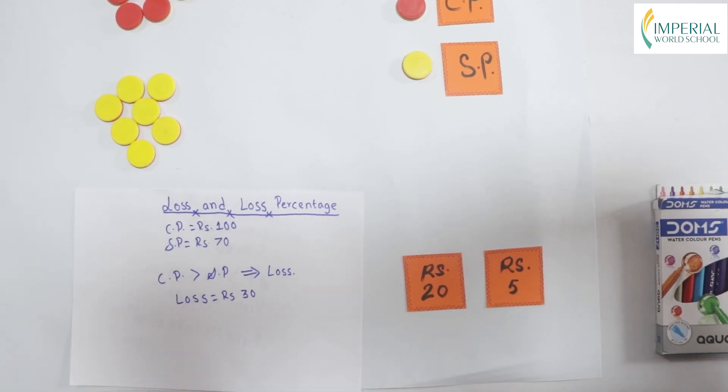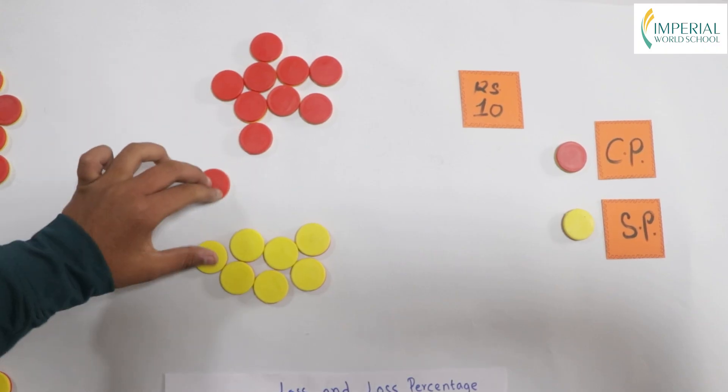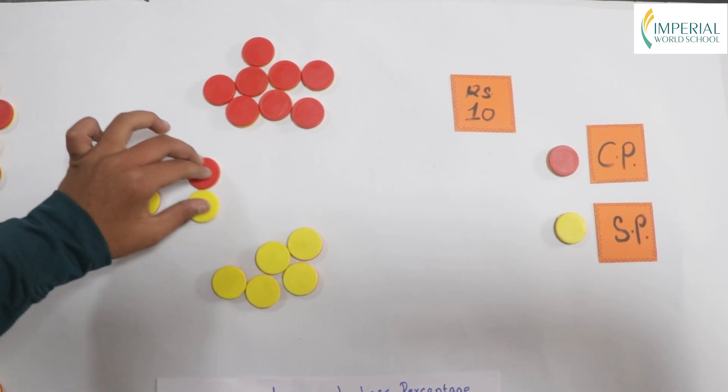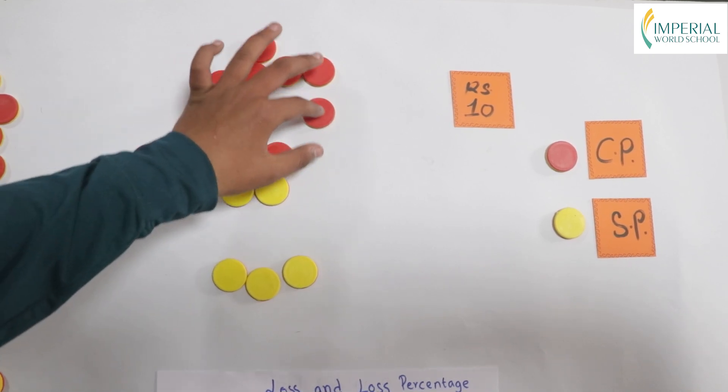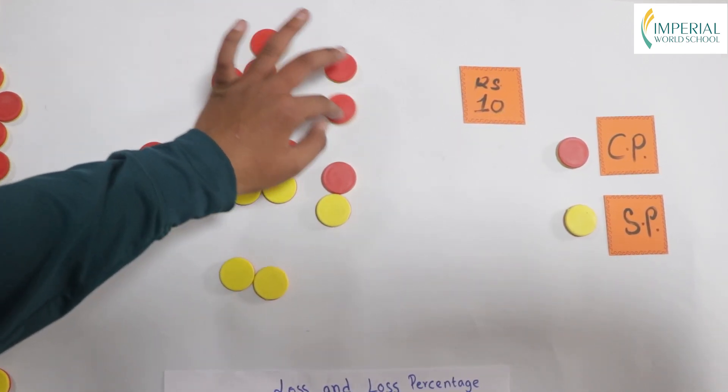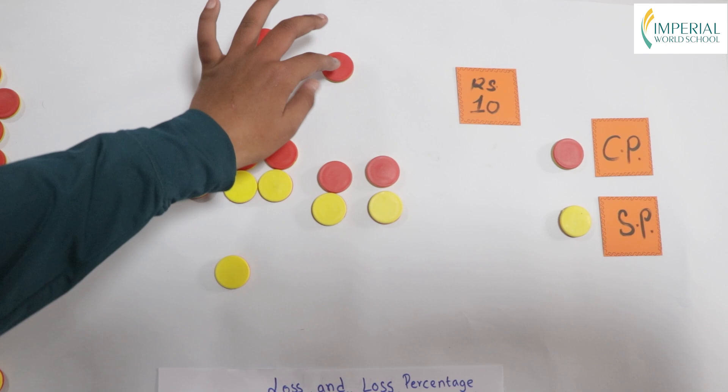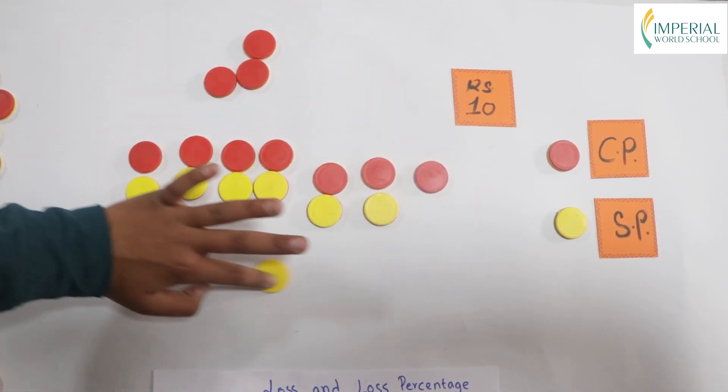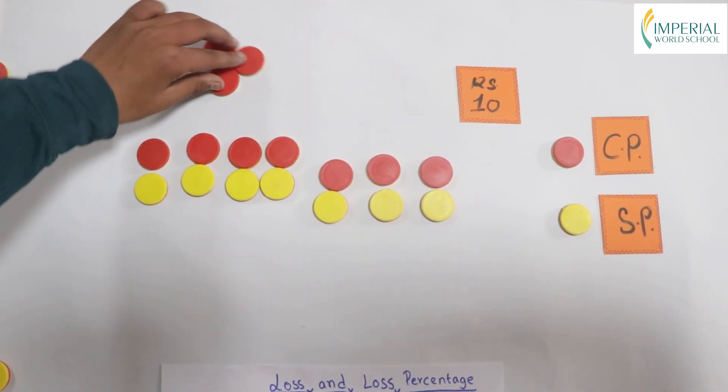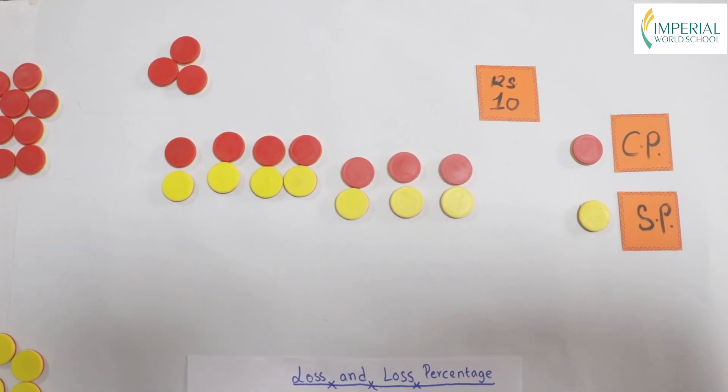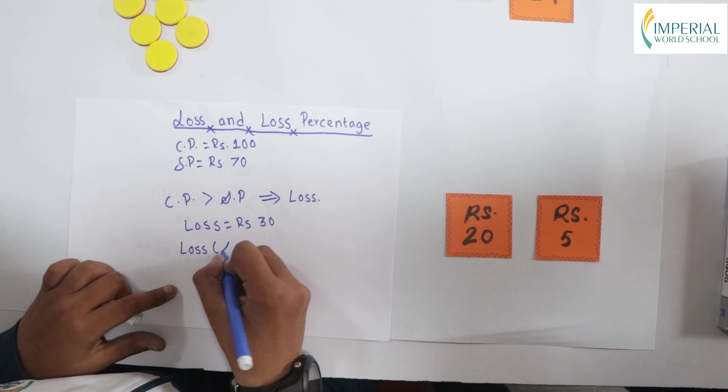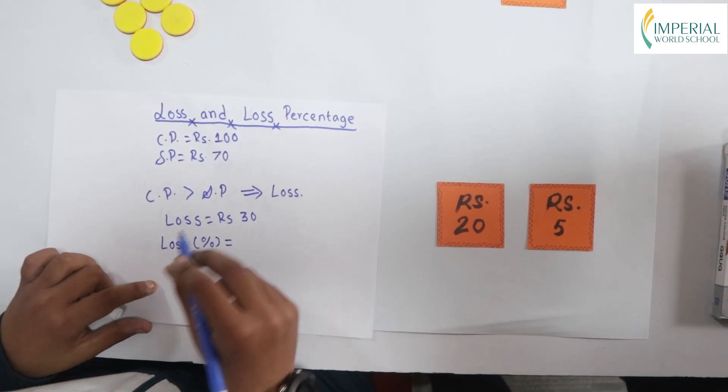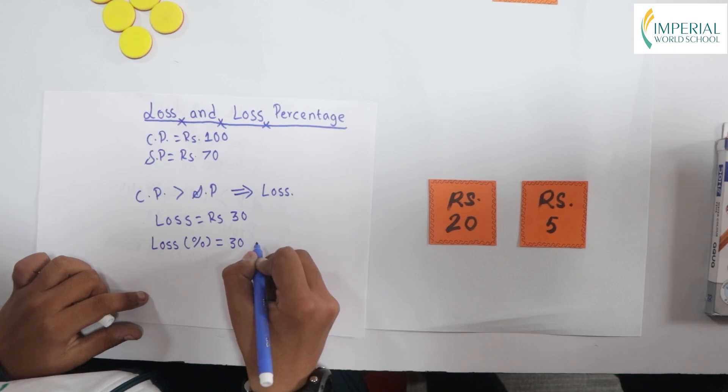Now, let's find out the loss percentage. We find our loss percentage with respect to cost price. Since we had 3 tiles left, and since all the tiles contain 10 percent each, these 3 are 30 percent. So, our loss percent is 30 percent.